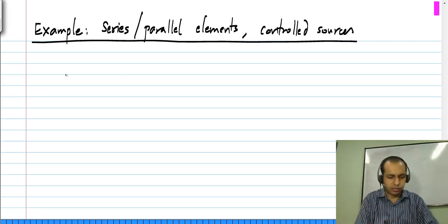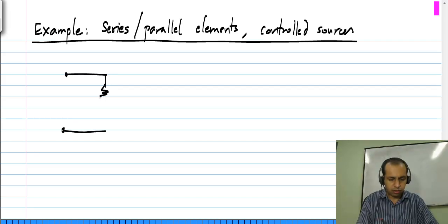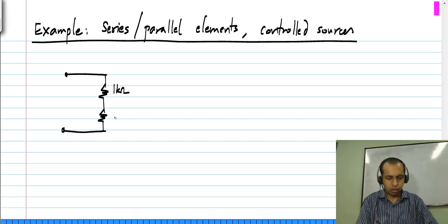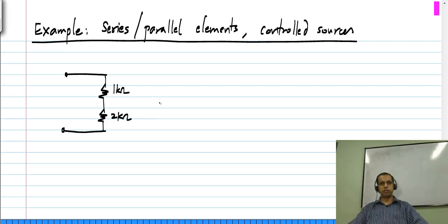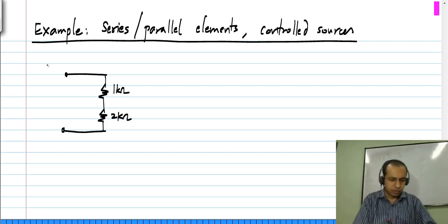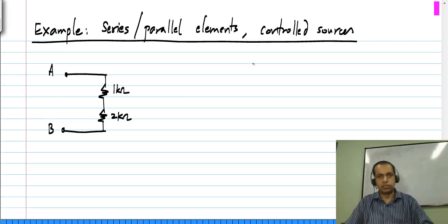Let us take a very simple case. A circuit like this with two resistors in series and any kind of question can be asked about this. For instance, one could ask you what the equivalent circuit is between the nodes A and B.